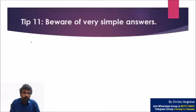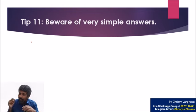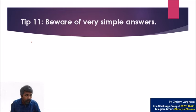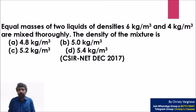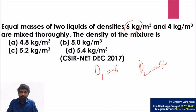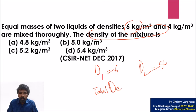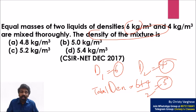The final tip: beware of very simple trap answers. A December 2017 NET exam problem: equal masses of two liquids with densities 6 and 4 — what is the density of the mixture? A common mistake is to average them: (6 + 4) / 2 = 5. That wrong answer of 5 will definitely appear in the options to tempt you. This is totally wrong — you cannot add densities like that, just as you cannot add speeds like that.